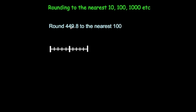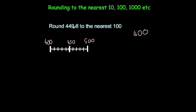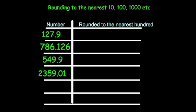Now we're asked to round 449.8 to the nearest hundred. We have 400 as 100 below and 500 as 100 above, with 450 in the middle. 449.8 is just to the left of the middle, so it's closer to 400 than to 500. Looking at the tens column, the digit is a 4, so we round down to 400.